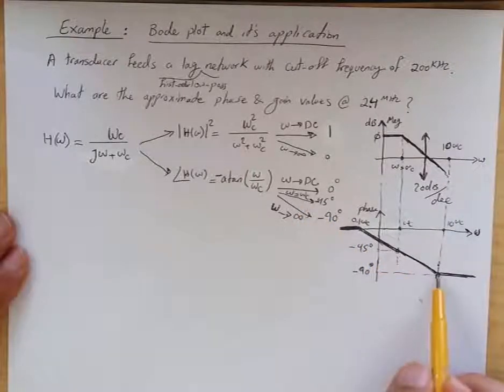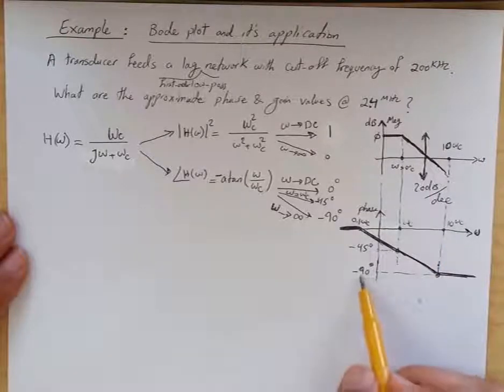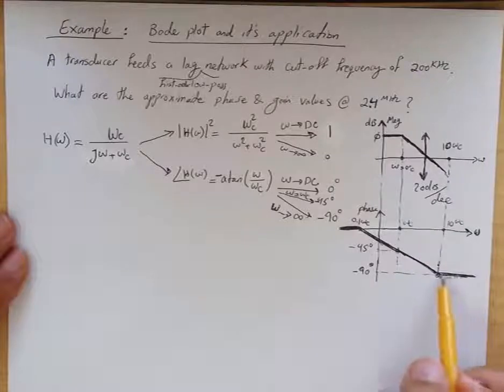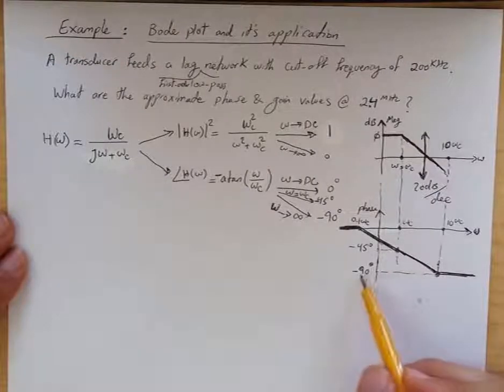Finally, at ω equal to 10 times ωc, we approximate the phase approaching minus 90 degrees. From that point on, we treat the phase as constant at minus 90 degrees for super high frequency.